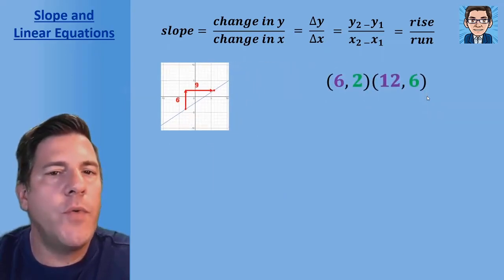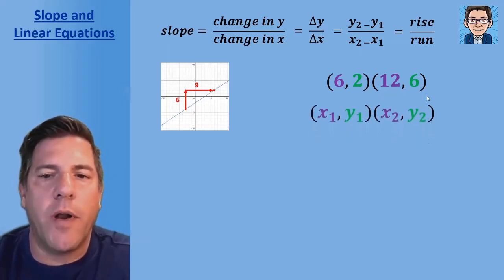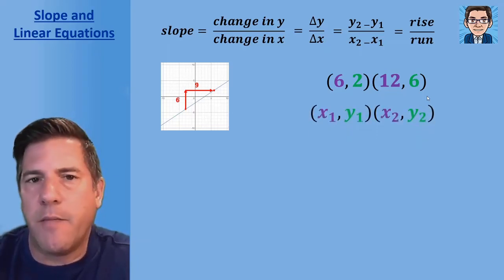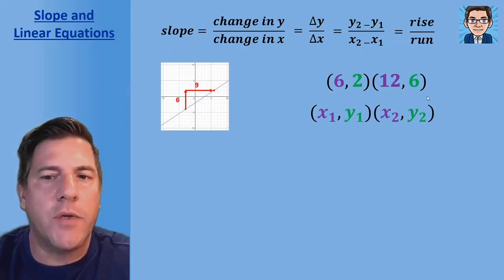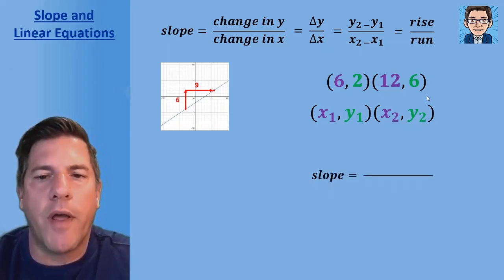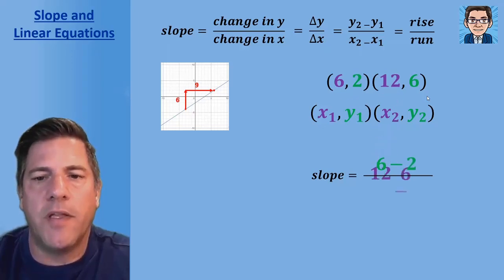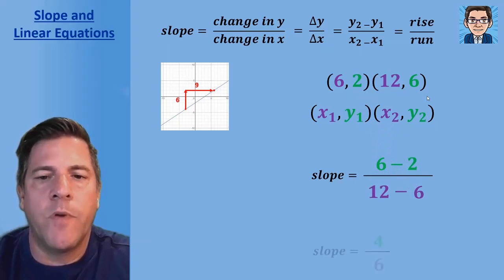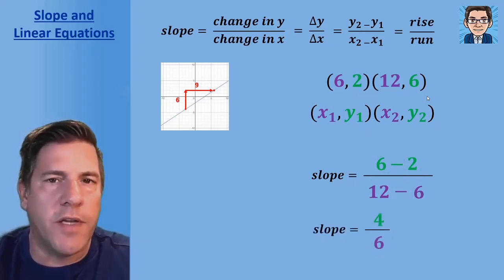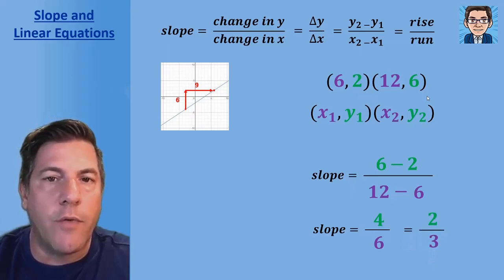When we have two points, label the first one x1 and y1, and the second x2 and y2. To find the slope of the line through those two points, the numerator is the difference in the y's and the denominator is the difference in the x's. We subtract those out and get four over six, then reduce the fraction to two over three.